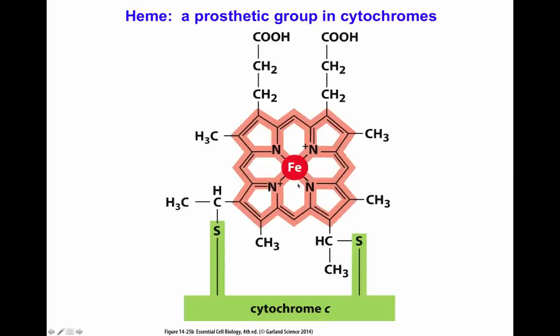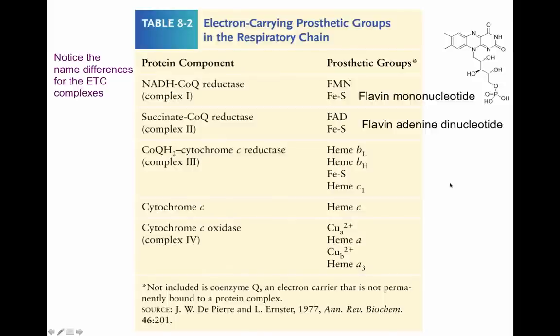That is one of the main reasons why cytochrome C can only accept one electron. Here we have an image of the prosthetic group. The heme group is connected to the protein portion by sulfate bonds, and the iron inside is trapped by a cage of nitrogen in the middle.